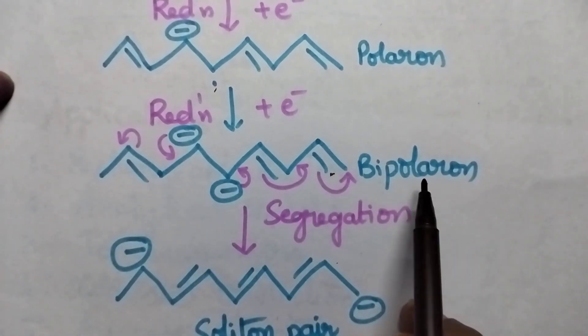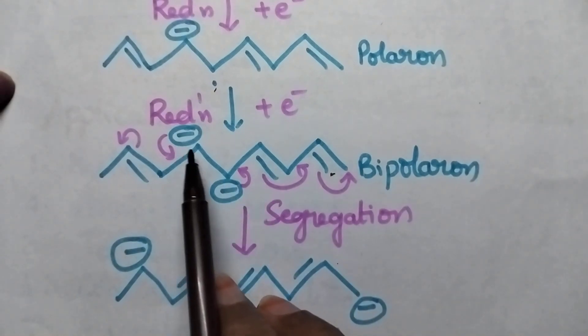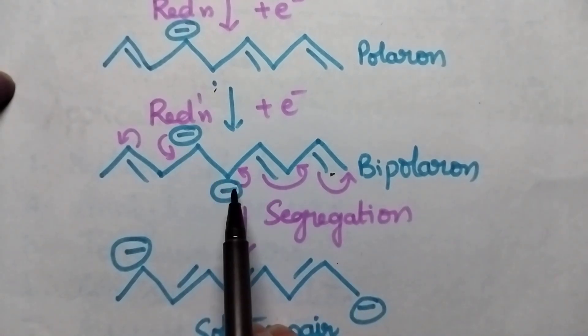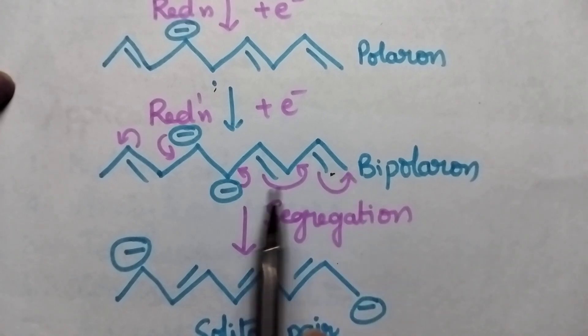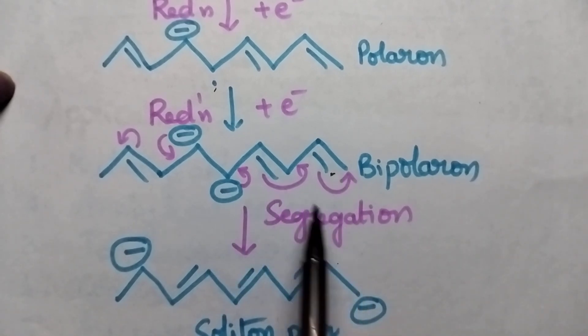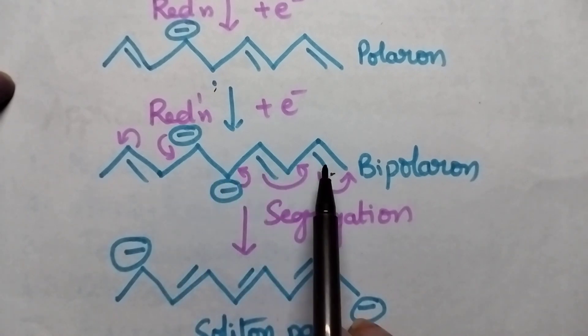During the formation of bipolaron, the two negative charges are very close to each other and it gives instability to the molecule. Hence, in order to attain stability it undergoes segregation. Segregation means the dispersal of the charge takes place.